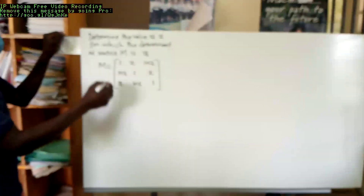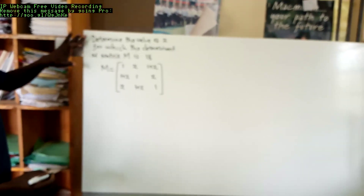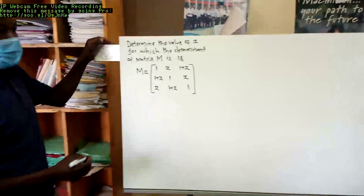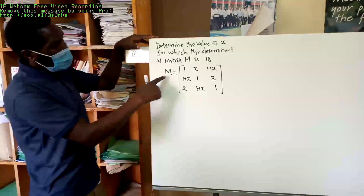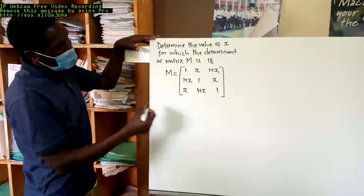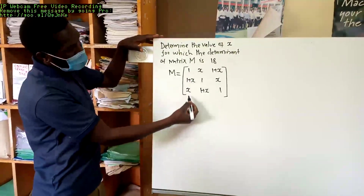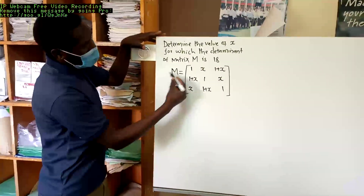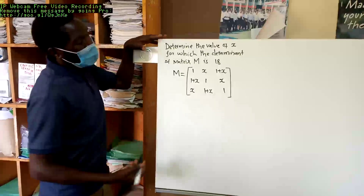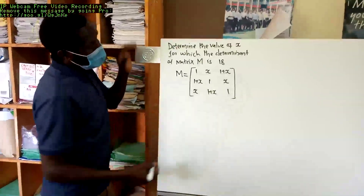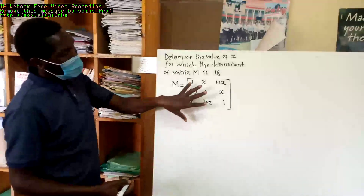We want to work this equation out. We are supposed to determine the value of X for which the determinant of matrix M is 18. Matrix M is given by these elements. These ones are called columns, so we have three columns, and these ones across are called rows. Now these values forming the matrix M are called elements.